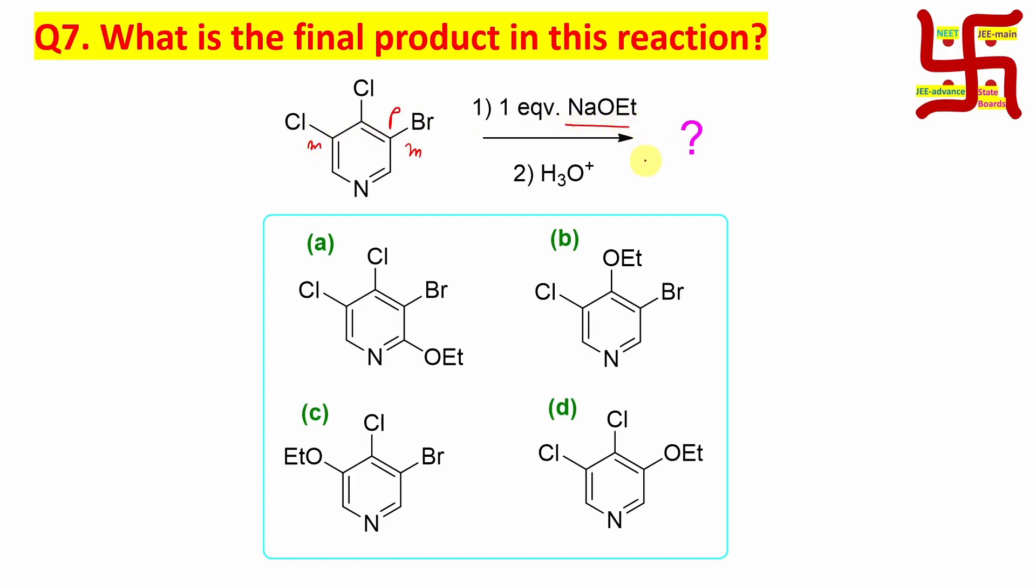One equivalent sodium ethoxide is given in the first step. Second step is acidic workup. So sodium ethoxide is an ionic compound and it results in ethoxide as a nucleophile.